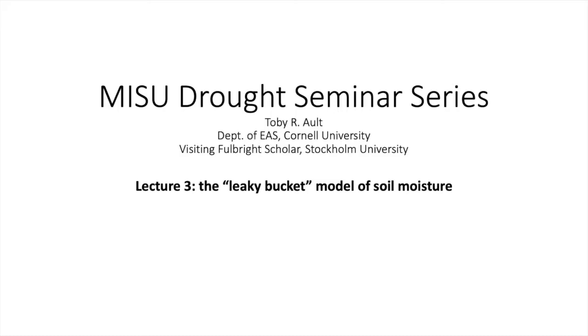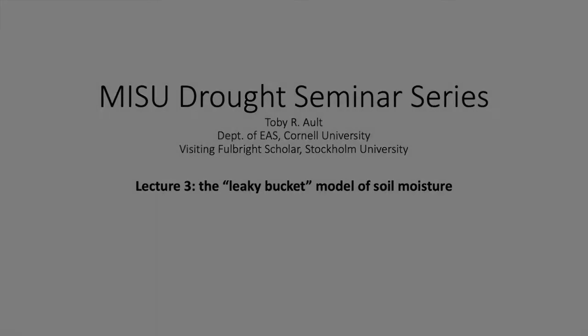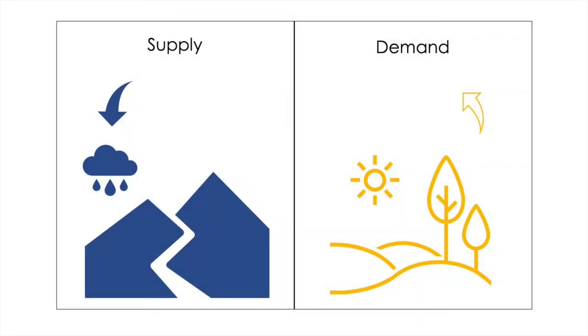Just to recap from the previous two lectures, a central idea to understanding drought is the concept of supply and demand. If the demand for moisture exceeds the supply for an extended period of time, you tend to have a drought. The details are specific to the system you're dealing with or your research project, but in a very general sense, this idea of supply and demand is central to our thinking about drought.